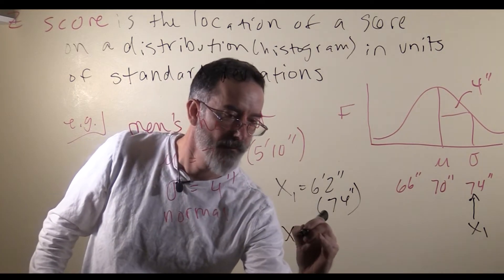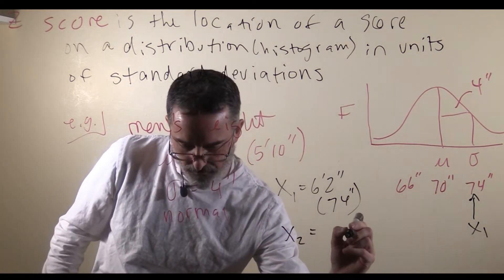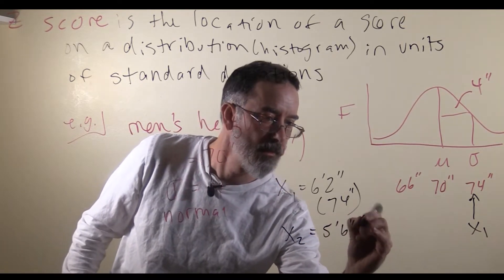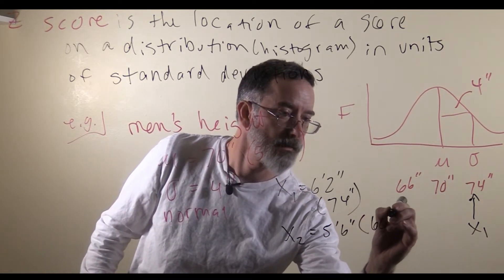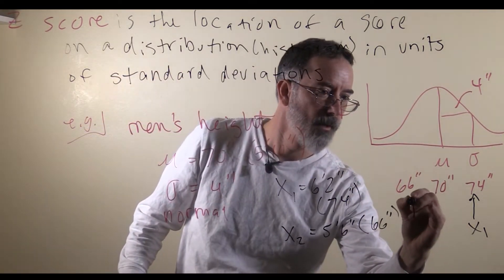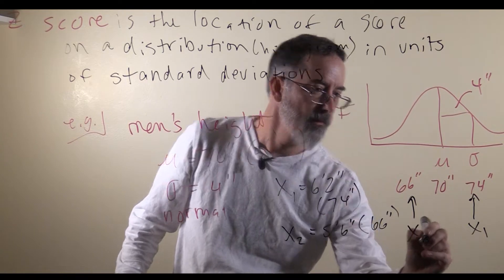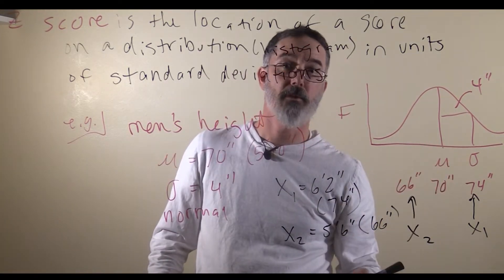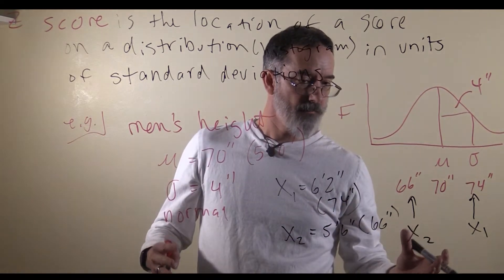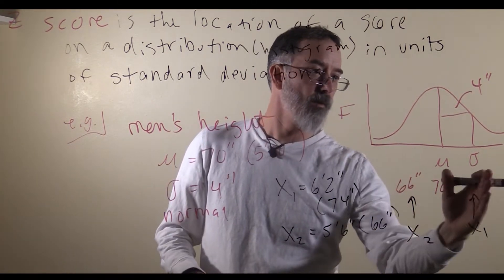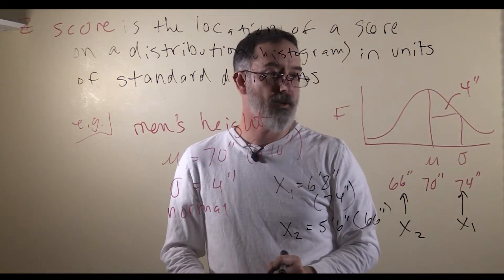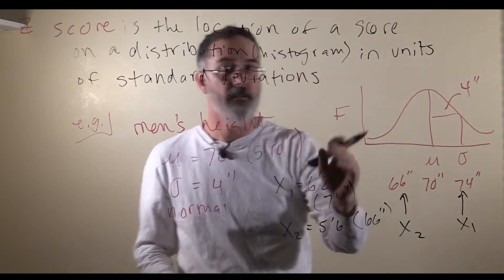If we consider another guy, x2, his height is 5 foot 6 inches, which is the same as 66 inches. His height is right there — he is one standard deviation below the mean. If somebody else shows up, we could measure their height and find out where that individual is with respect to all other men on this distribution, and figure out if he is relatively tall or relatively short.